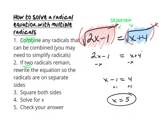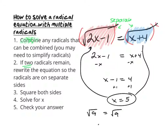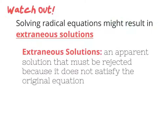If we check our answer and plug 5 into the left side: 2 times 5 is 10, 10 minus 1 is 9, and on the right side 5 plus 4 is 9. The square root of 9 equals the square root of 9 — that checks out. The last thing we're going to cover today with radical equations is that we have to watch out for something called extraneous solutions. Extraneous solutions are apparent solutions that must be rejected because they do not satisfy the original equation.